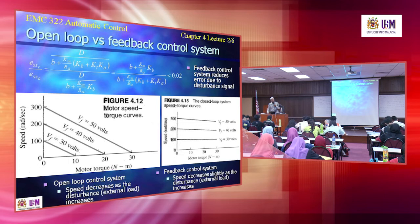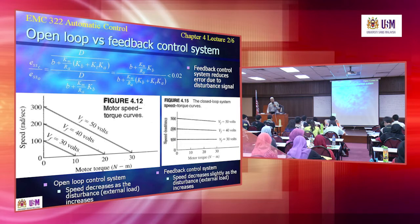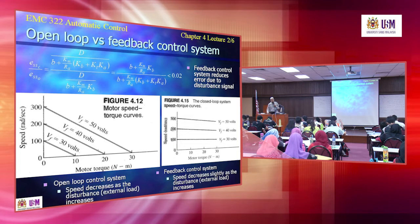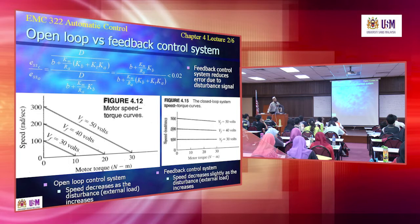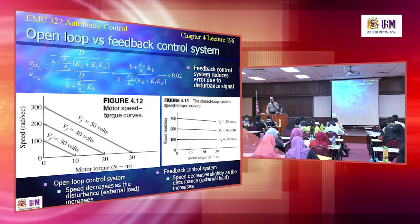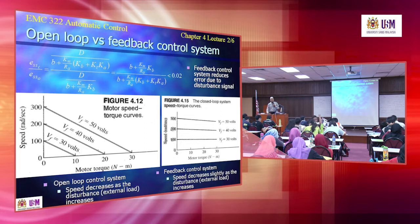If we form the ratio of the two errors, D cancels out. The numerators are the same, but the denominator of the closed loop error has the extra term KM·KT·KA/RA. Since this extra term is in the denominator, if KA·KT is positive, the denominator for the closed loop becomes bigger, making the steady state error of the closed loop smaller.